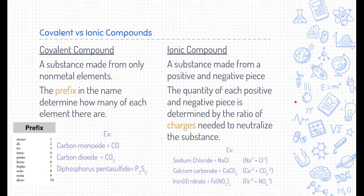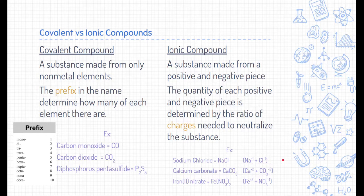Our first example is sodium chloride — NaCl. The reason it's one sodium and one chlorine is because of their charges. Sodium's charge is positive one and chlorine's charge is minus one. You might be asking how we know what these charges are — I'll show that on the next slide with the periodic table. Because sodium is positive one and chlorine is minus one, you only need one of each to cancel each other out.